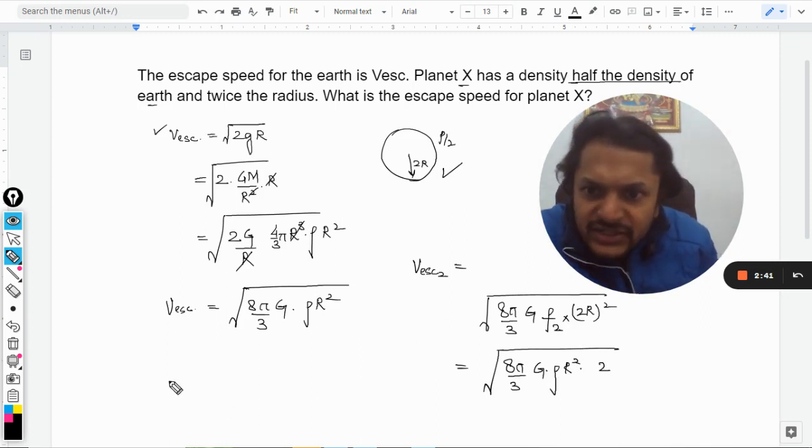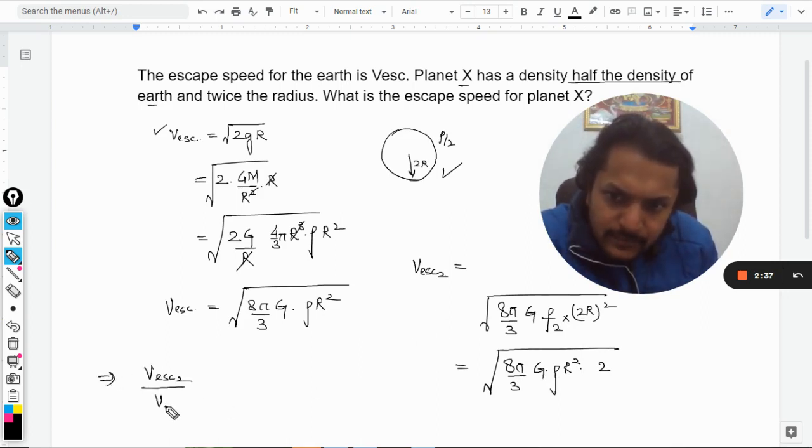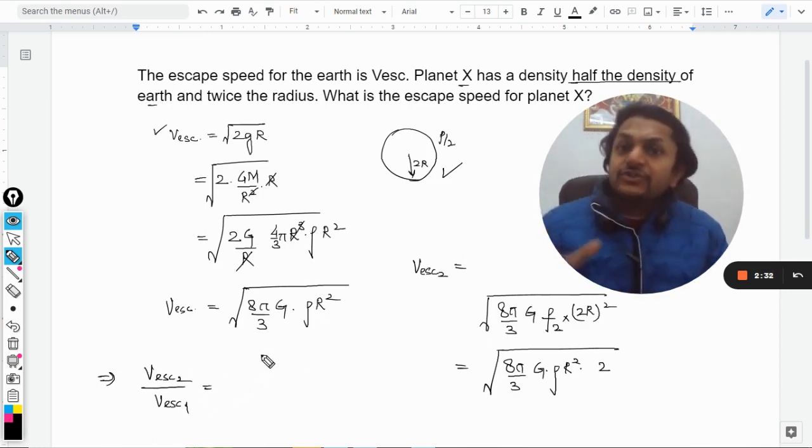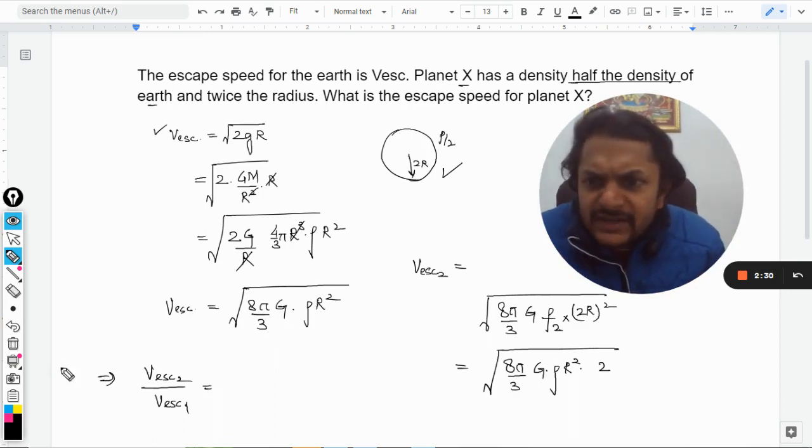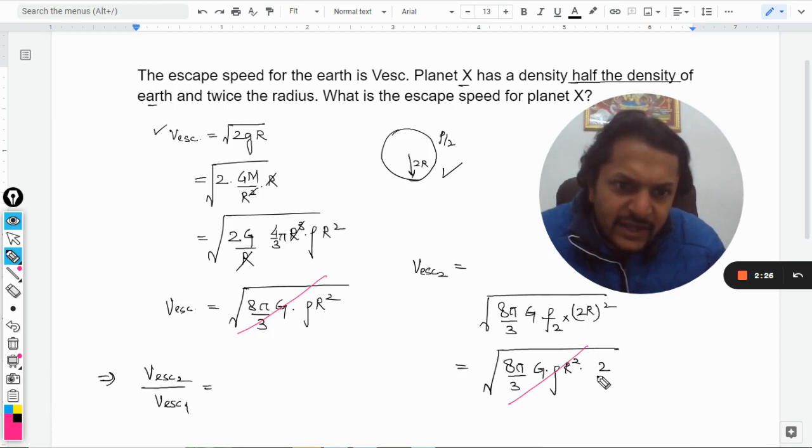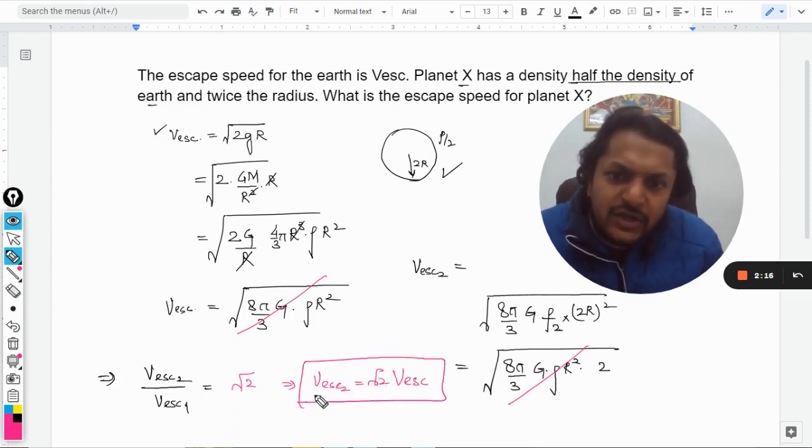So we can now compare these two. So this divided by this and I'm just not writing this thing. So this complete thing will get cancelled out by this thing and only root 2 will be remaining. So our answer will be root 2. So this implies your escape speed for the second planet is root 2 times the escape speed of the earth.